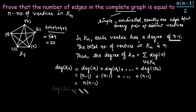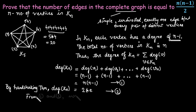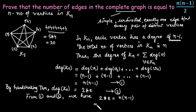By the handshaking theorem, the total degree of the graph equals twice the number of edges. So the degree of the complete graph K_n equals 2E, where E is the number of edges. From these two equations, 2E = n(n-1), which implies the number of edges equals n(n-1)/2 in a complete graph with n vertices.